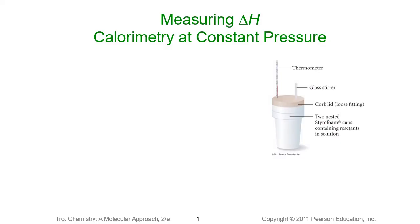The way that we measure the change in enthalpy is using something called coffee cup calorimetry. It's called coffee cup calorimetry because it happens at constant pressure, so the equipment can be much simpler. We use two nested Styrofoam cups to try and insulate it a little better, and we put a lid on the cups to hold as much heat inside as possible.